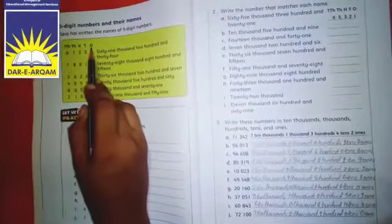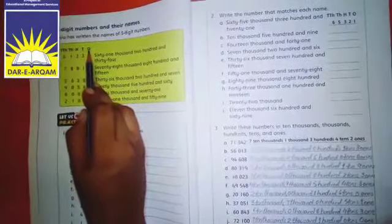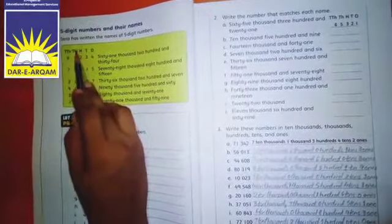With five digit numbers, the name is ten thousand. You got the concept in the video also. Always start from the right side: ones, then tens, then hundred, then thousand, then ten thousand. Okay?